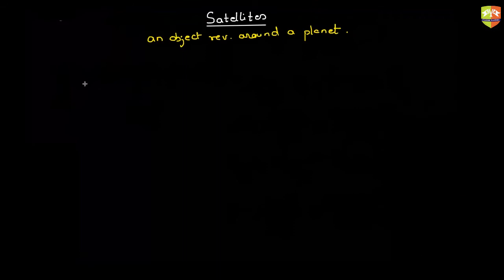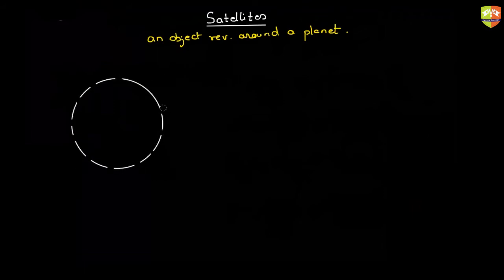Now let us try to analyze the behavior of a satellite. Let's say this is the orbit of the satellite — the satellite will be moving in a circular orbit. We are assuming it will be moving in a circular orbit. If it comes under the influence of neighboring planets there will be slight distortion, but more or less it will be circular. So all the motion in this chapter we are assuming to be circular only, whether it is a planet revolving around the Sun or a satellite revolving around a planet.